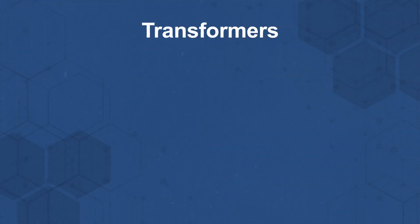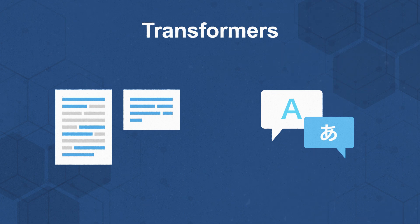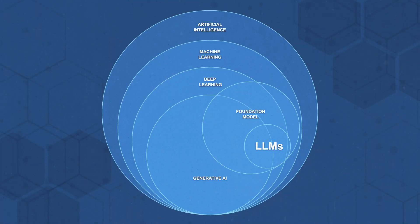Transformer models are well-suited to language-related tasks, like text summarization and translation. In recent years, transformers have become the leading architecture for many cutting-edge AI language models. This brings us to Large Language Models, or LLMs, a class of foundation model that typically uses a transformer architecture.